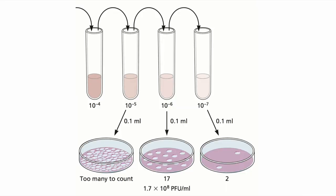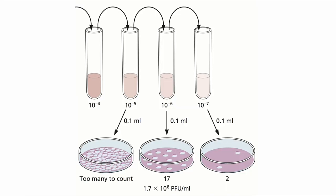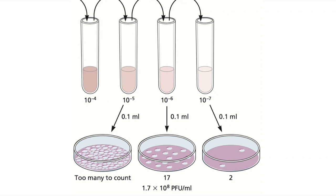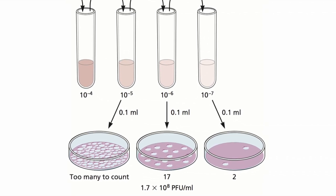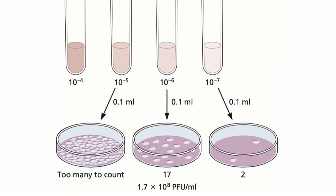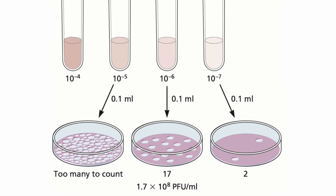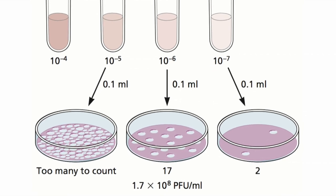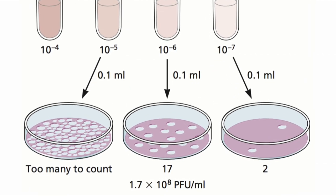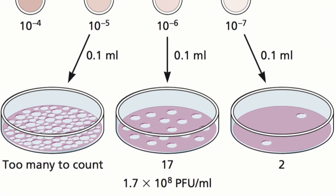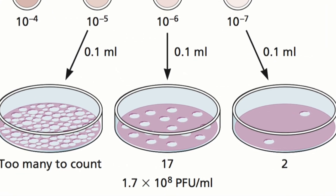Calculating the virus titer is easy. In this example, there are 17 plaques on the countable plate. The other plates have too few or too many plaques to count. The dilution on that plate is 10 to the minus 7 — the dilution of 10 to the minus 6 in the tube, plus one more tenfold dilution because we only plated 0.1 ml. The final virus titer is 1.7 times 10 to the eighth PFU per ml.